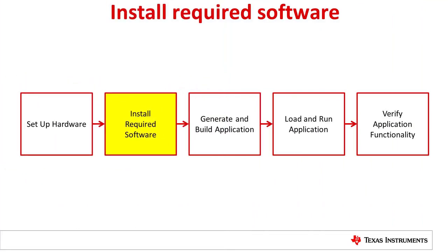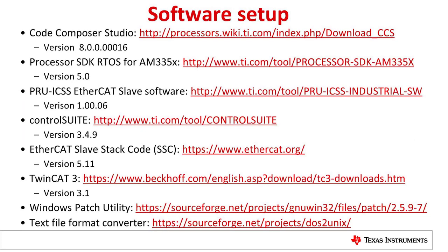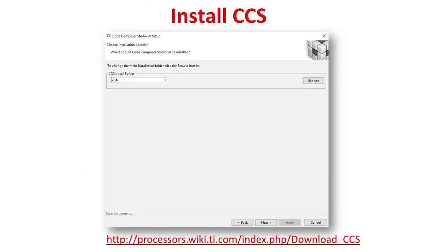Next let's take a look at the software required to run the demonstration. Please note that the software version numbers will change over time. At the time of filming, the version numbers listed on the screen were used. It is recommended to install all of the TI software in its default location. Please note that if you choose to install in a custom directory, some modification of scripts will be required in later steps.